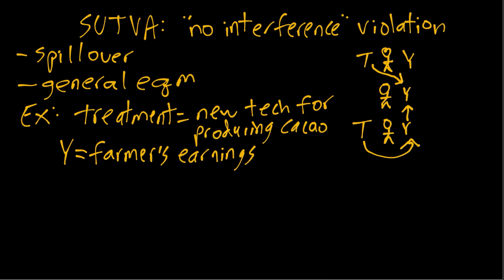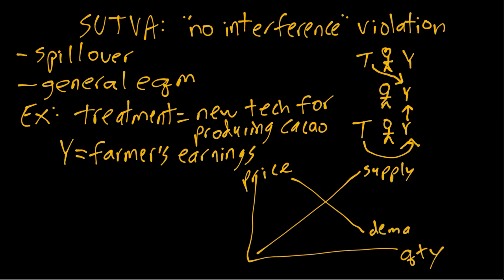Because if we imagine we have price on the vertical axis and quantity on the horizontal axis, here we have our global cacao supply and demand curves. So what this technology would do if every farmer adopted it is basically, for the same price, they'd be willing to supply a larger quantity of cacao because it's increased their productivity.